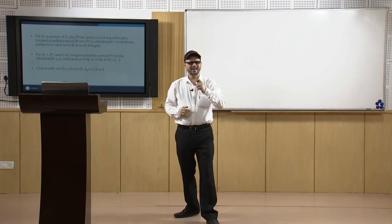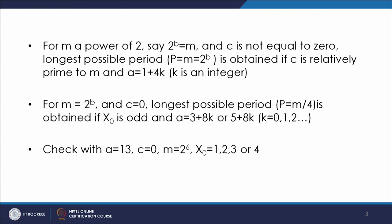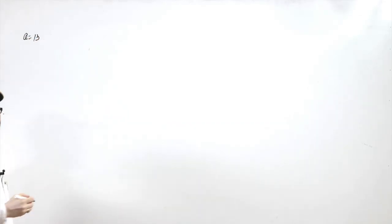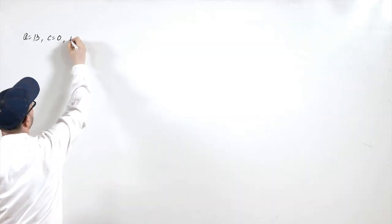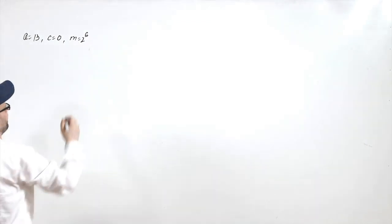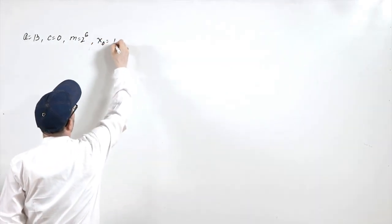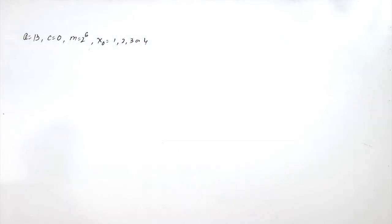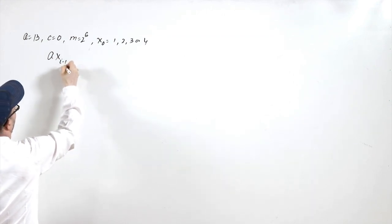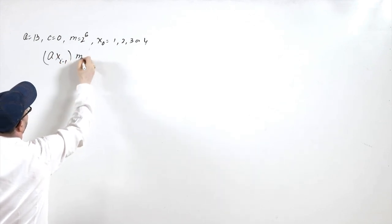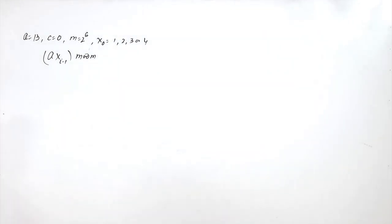You can check this with a equal to 13, c equal to 0, m equal to 2 raised to the power 6 (which is 64), and x₀ as 1, 2, 3, or 4. In this case the formula is x_{i+1} = a · x_i mod m, with a equal to 13, c equal to 0, and m equal to 64.